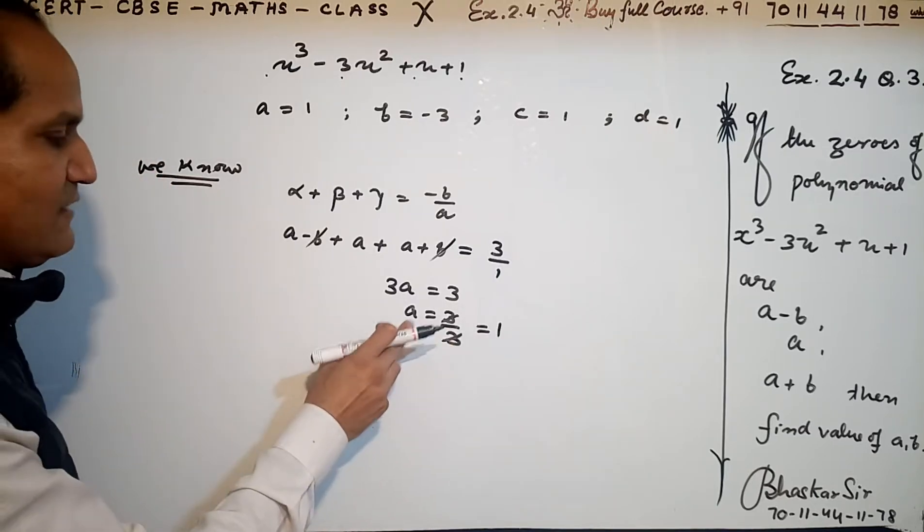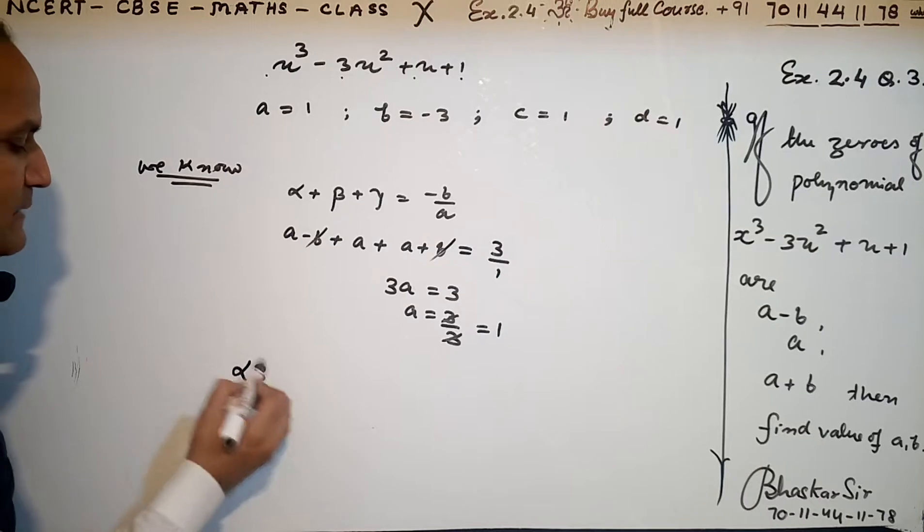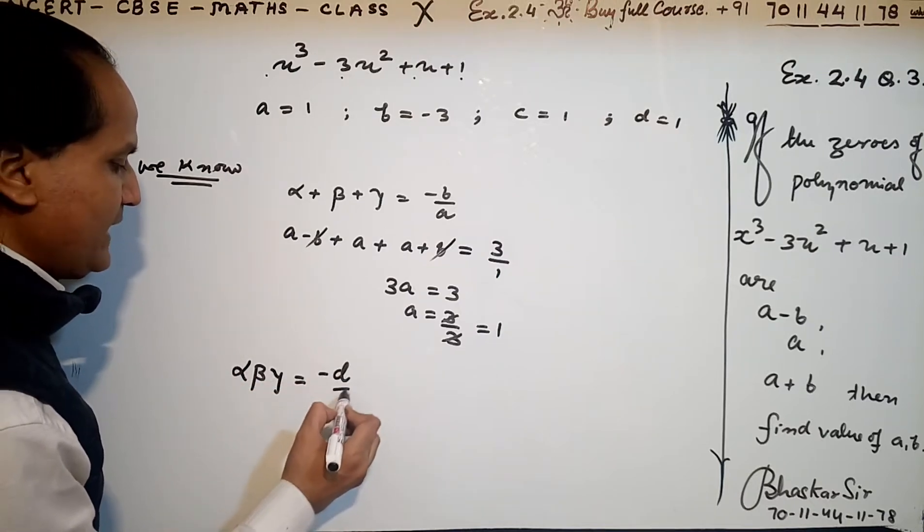Now I can put this value of a in another formula. I also know that the product of the zeros: αβγ = -d/a.